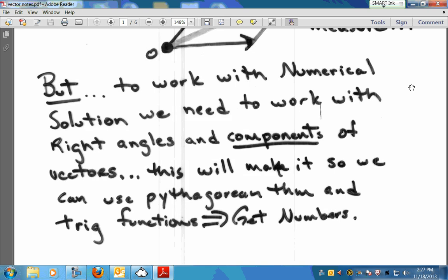So to work with numerical solution, we need to work with right angles. And in order to get everything to right angles, we're going to do something called the components of vectors. And this is the breaking down business that we talked about. So we know if we can get everything to be at right angles to each other, it'll work. We're going to break everything down so that we can get everything to be at right angles. And that'll make it so that we can use our Pythagorean theorem, and we can also use the basic trig functions. You guys know the basic trig functions? Sine, cosine, and tangents. We can use those, and that'll help us so that we can get numbers.